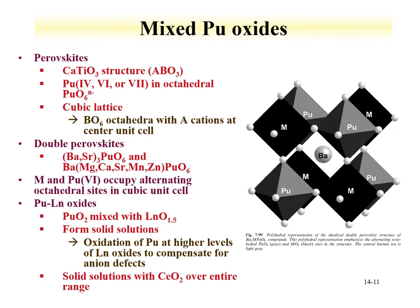Mixed plutonium oxides include perovskite-type structures (ABO₃) into which plutonium of different oxidation states can be incorporated along with fission products. Double perovskites have also been evaluated, with plutonium in the B-site and other metal ions including fission products in the A-site, making an interesting waste form. Plutonium lanthanide oxides have been evaluated as solid solutions; for some lanthanides such as cerium dioxide, solid solutions can be formed over the entire range, similar to behavior observed in the uranium and thorium systems.